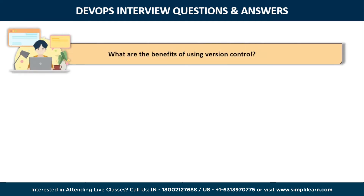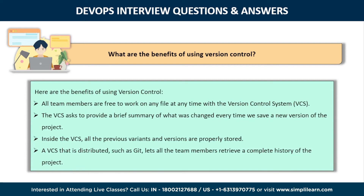The seventh question is: what are the benefits of using version control? All team members are free to work on any file at any time with a version control system (VCS), and the VCS will allow the team to integrate all modifications into a single version. The VCS provides a brief summary of what was changed every time we save a new version of the project. All previous variants and versions are stored, and we can retrieve a snapshot of the entire project at any moment. A distributed VCS like Git lets all team members retrieve a complete history of the project, allowing developers or stakeholders to use local Git repositories even if the main server goes down.